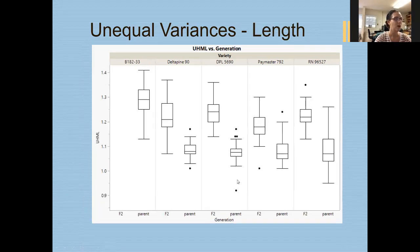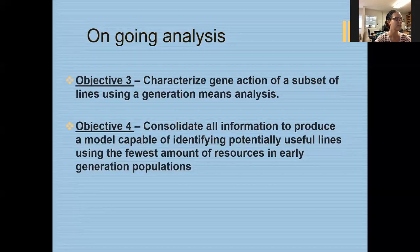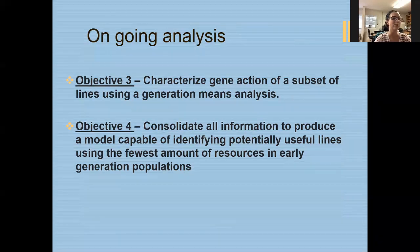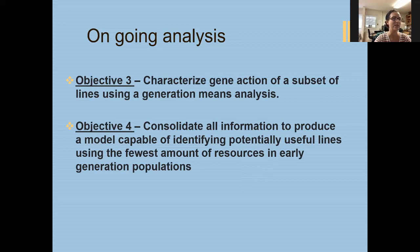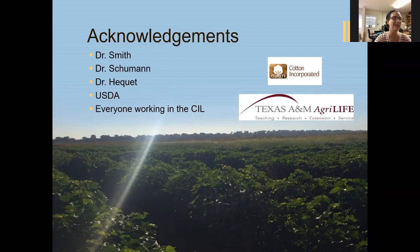Looking at both together, it confirms there is quite a bit of variance, as expected. For ongoing analysis, I have the generation means analysis data which still needs to be analyzed — I had hoped to present that, but unfortunately there were some complications with the weather last week. Going forward, I hope to get that analyzed and consolidate all of this information to continue onward with the project. I'd like to acknowledge Dr. Smith, Dr. Schumann, Dr. Heke, the USDA, and everyone working in the CIL, as well as Cotton Incorporated and Texas A&M AgriLife. With that, I'd like to take any questions.